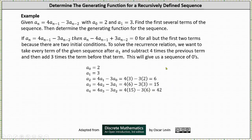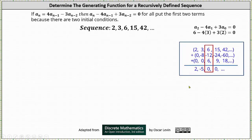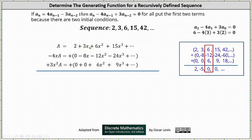We now know the first several terms of the given sequence: two, three, six, fifteen, forty-two, and so on. Now let's determine the generating function. The key to setting this up is using the equation a sub n minus four times a sub n minus one plus three times a sub n minus two equals zero. For the first step, we let A equal the generating series for the given sequence, where we have A equals two plus three x plus six x squared plus fifteen x cubed plus dot dot dot.